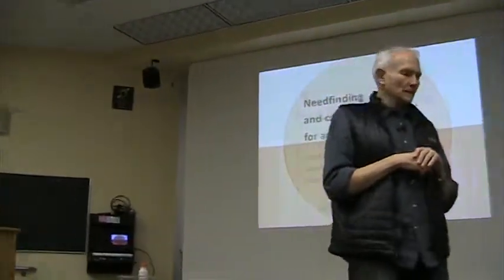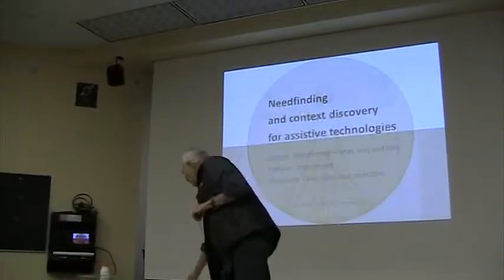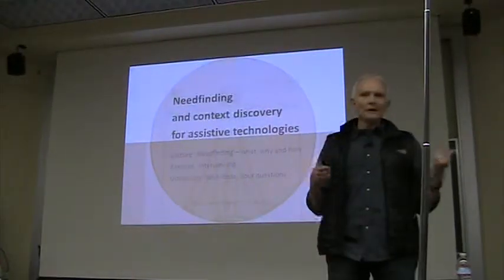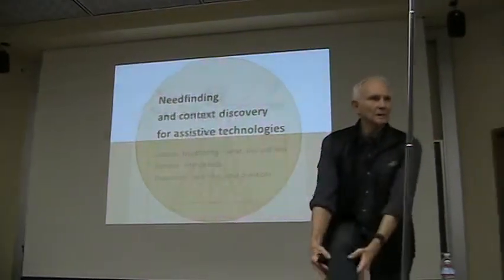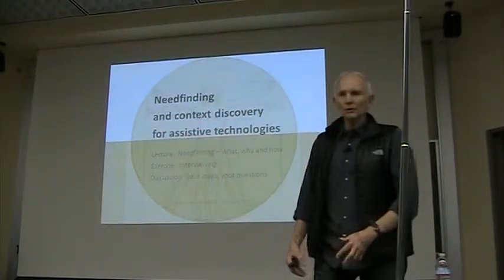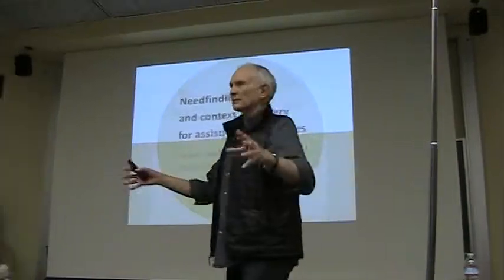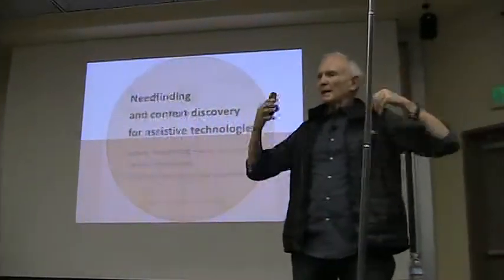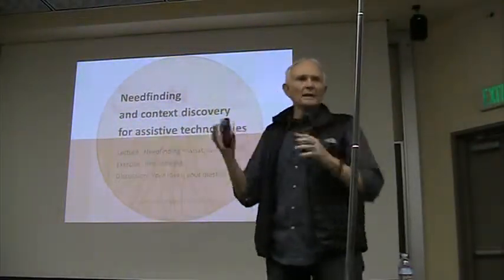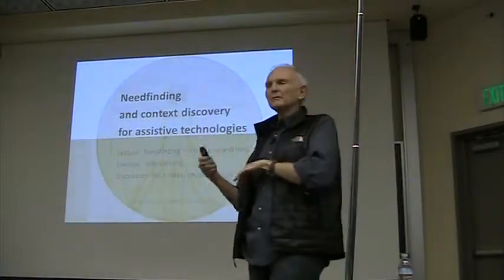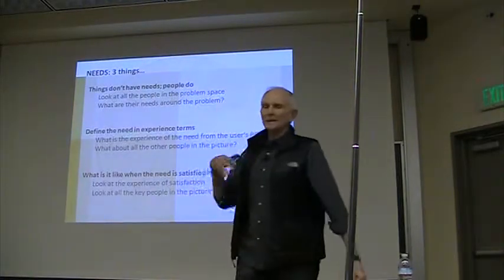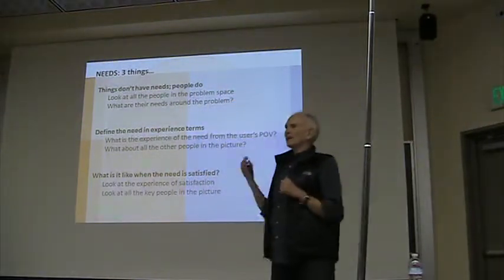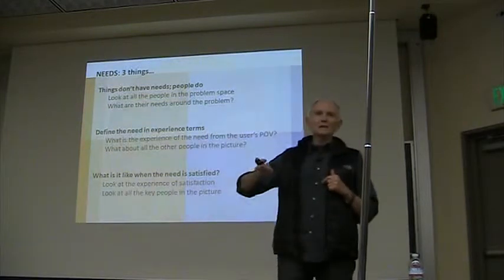That's what Gail wants to talk about today: where do we start? We have great project ideas — like the device to slip over someone's leg to look normal, or the musical instrument ideas — and it's easy to want to jump in and build a great gadget. But the main point of view to start with is that it's great to have that enthusiasm, but we want to keep three things in mind first. The first is: things don't have needs, people do.